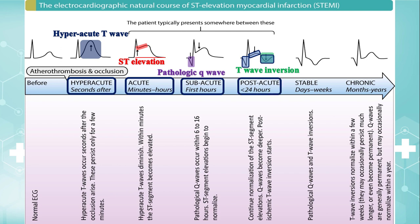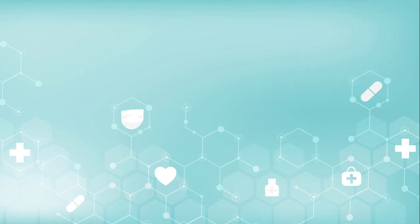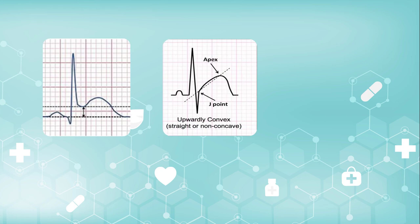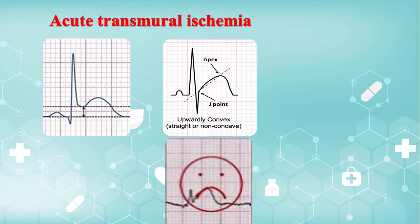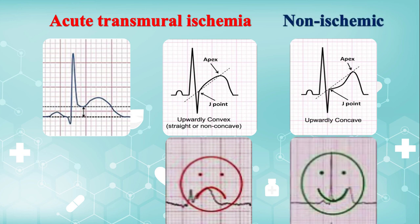By the passage of time, ST elevations and T wave inversions diminish, while pathological Q waves are generally permanent. After a brief overview on stages of ST elevation MI evolution, it's time to examine EKG criteria for diagnosing acute ST elevation MI. ST elevations with straight or convex ST segments strongly suggest acute transmural ischemia. On the other hand, concave ST elevations are most often not caused by acute ischemia.